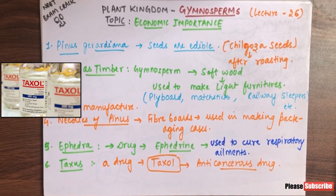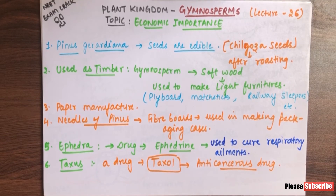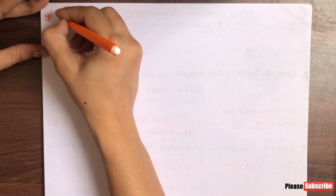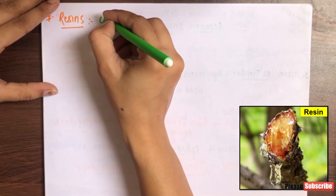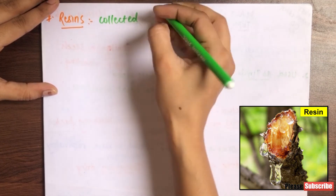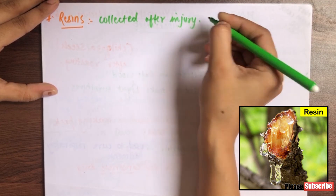Next, from gymnosperms, resin is produced — they are used in resin production. Resin is collected after injury to the plant — the plant is injured or cut, and then resin is collected from the incision. Resin has very many uses and it is used in many things. Let us see how resin is collected: after injury, a cut is made to the plant, and after that, resin is collected.